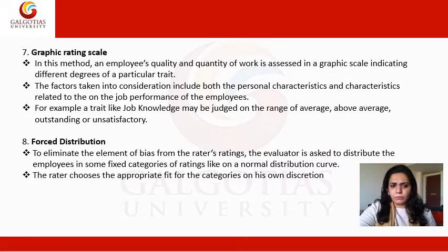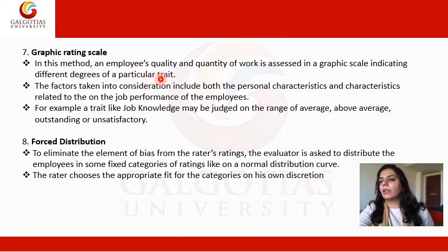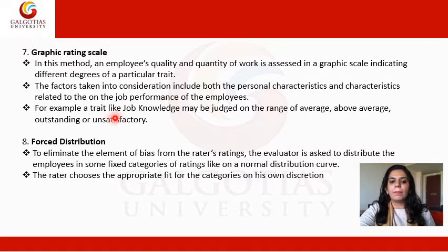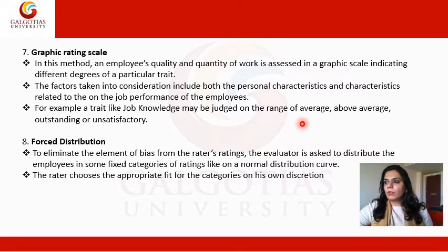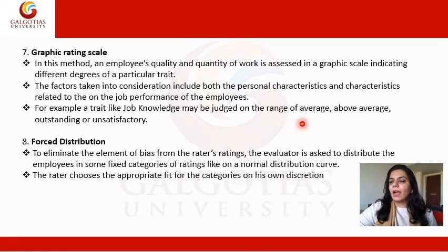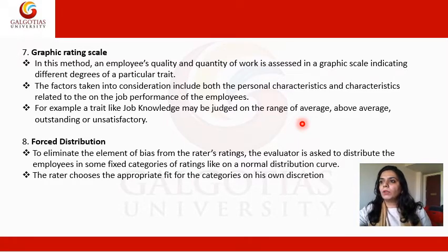Graphic rating scale is a comparatively better method. An employee's quality and quantity of work is assessed on a graphic scale indicating different degrees of a particular trait. Factors considered include both personal characteristics and job performance-related characteristics. For example, a trait like job knowledge may be judged as average, above average, outstanding, or unsatisfactory. A graph is drawn with those categories and the employee is placed into the appropriate category on that graph.